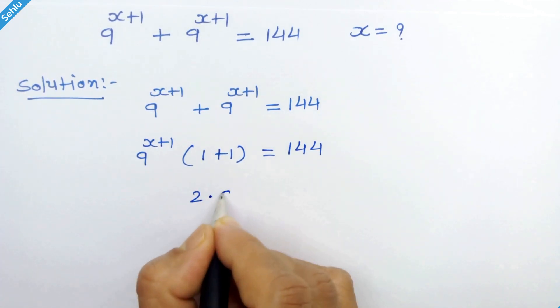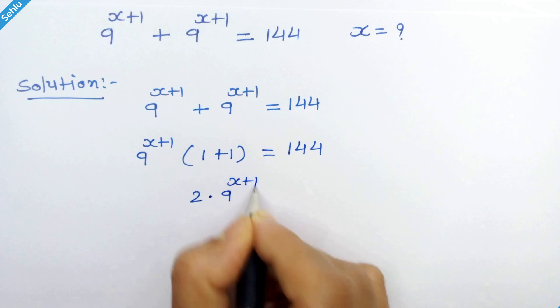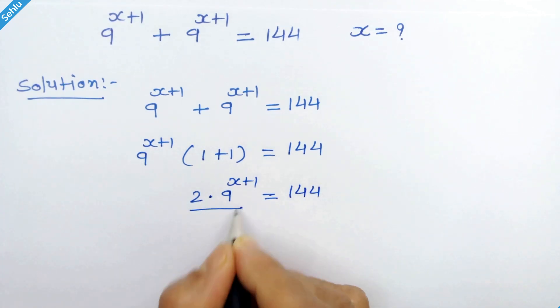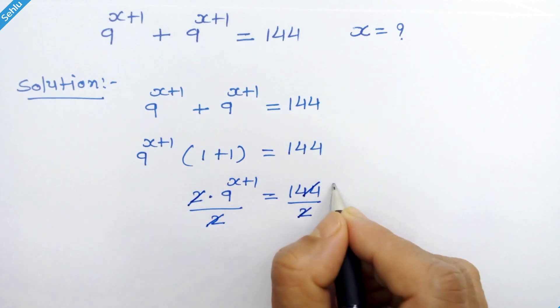Now we have 2 times 9 raised to x plus 1 is equal to 144. Now we will divide by 2 on both sides. So these 2 get cancelled out and here we have 72.